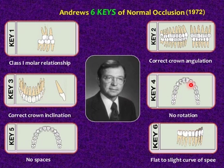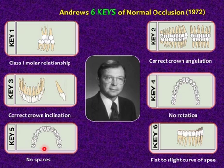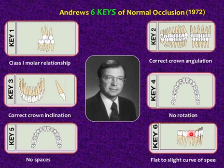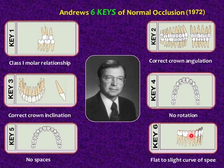Key number four: there should be no undesirable rotations. Rotated molars and bicuspids occupy more space than normal, while rotation of anterior teeth occupies less space. Key number five: there should be no spaces between the teeth — there should be tight contact. Key number six: the occlusal plane should vary from flat to a slight curve of Spee. A curve deeper than 1.5 mm at the region of the second premolar is not acceptable from the standpoint of occlusal stability.